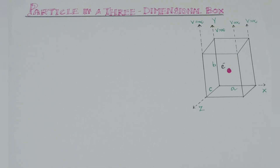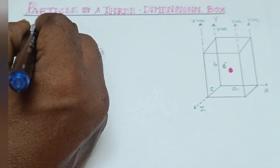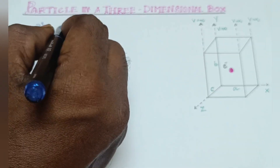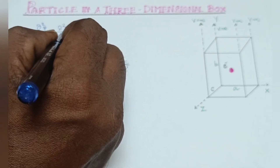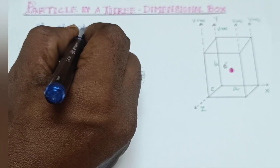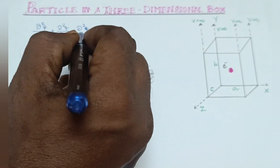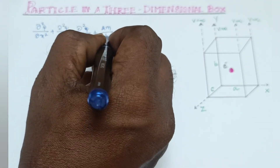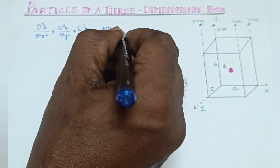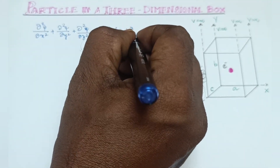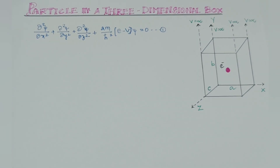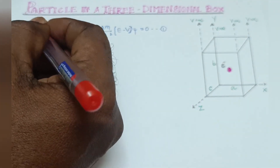Already knowing that, from the time-independent Schrödinger wave equation: d²ψ/dx² + d²ψ/dy² + d²ψ/dz² + (2m/ℏ²)(E − V)ψ = 0. This is equation number 1, according to the time-independent Schrödinger wave equation.